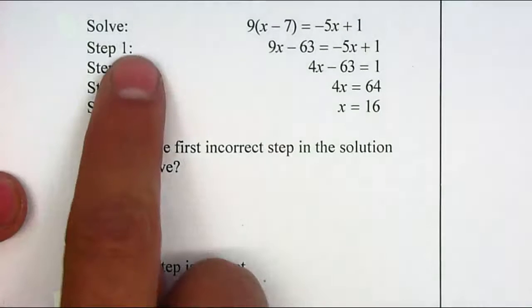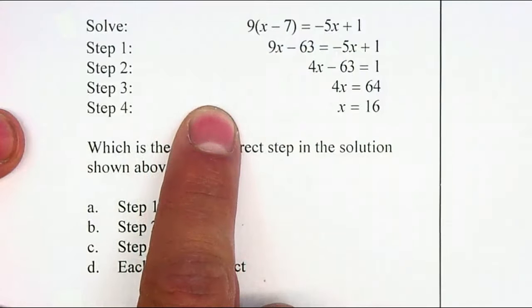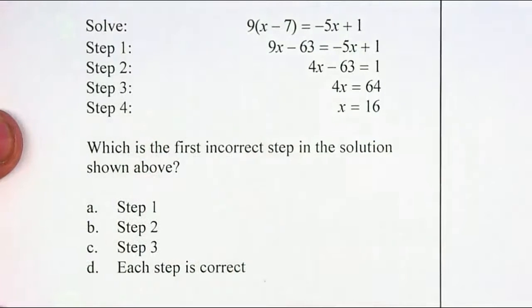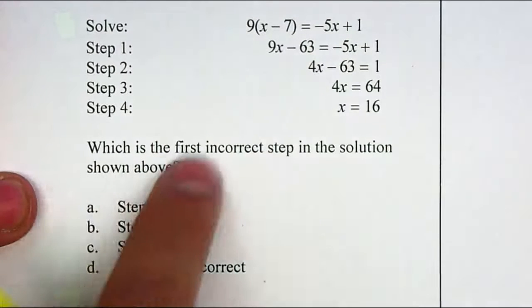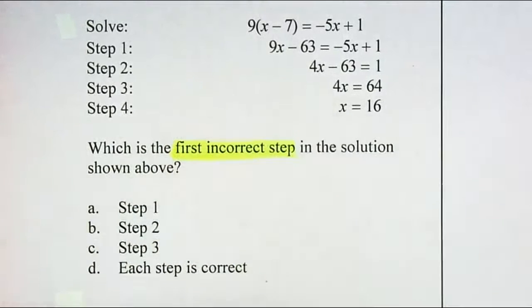On the following problem, it gives you an equation and a set of steps where they solve the equation. They ask which is the first incorrect step, so they're asking where they make the first mistake.